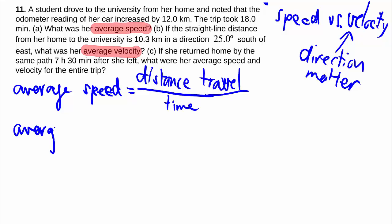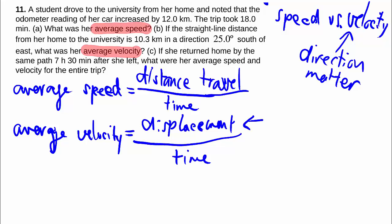Whereas average velocity you actually care about the direction you're going and so forward and backwards are different. So it ends up the only thing that matters is this thing called displacement over time where displacement is how far it is from the start to the finish regardless of what path you take in between.